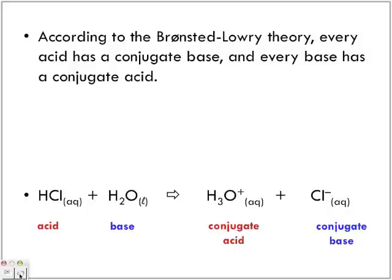According to the Brønsted-Lowry theory, every acid has a conjugate base. Every base has a conjugate acid. So what we have is here, this equation, no different than what we've had or what we've just looked at. So this acid is going to give up the hydrogen.